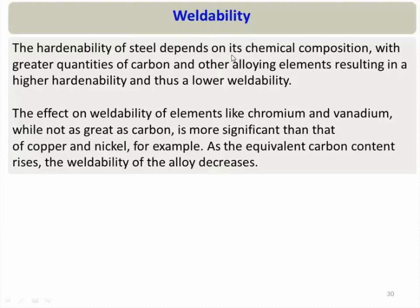The hardenability of steel depends on its chemical composition: a greater quantity of carbon and other alloying elements results in higher hardenability and lower weldability. When we increase carbon we gain strength, hardness, and hardenability; when we decrease carbon we gain ductility and weldability. Weldability is mostly decided by carbon as the sole most important alloying element in steel, but chromium and vanadium are second and third; copper and nickel have very little significance on weldability. That is why we talk about equivalent carbon content when discussing weldability.